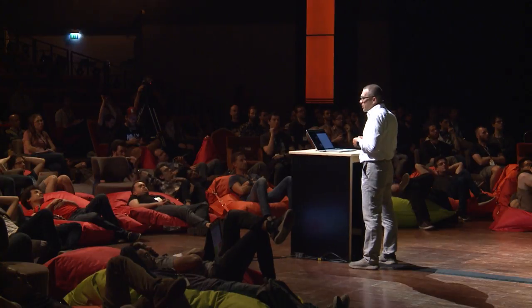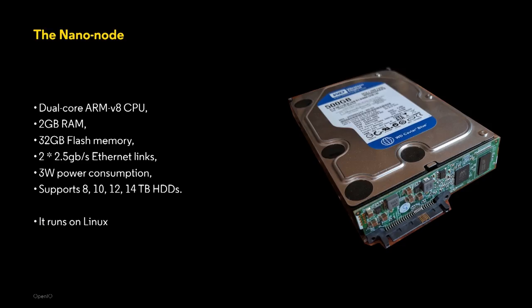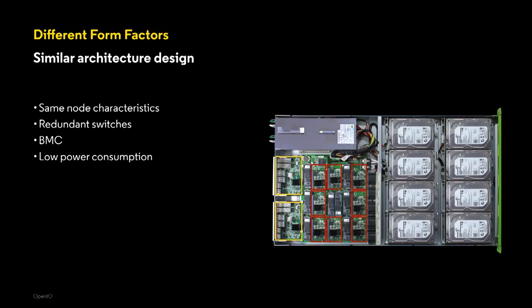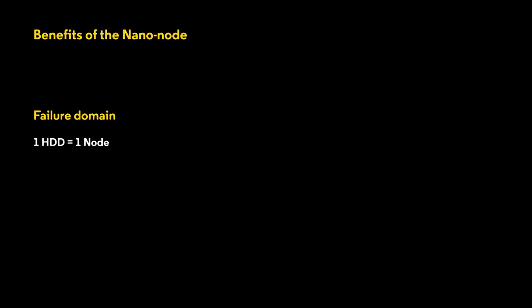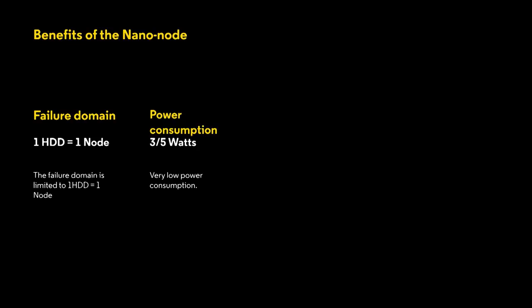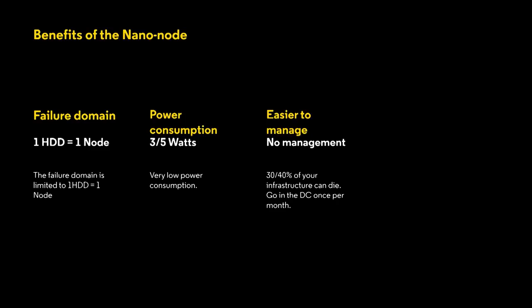What is happening now? There is a new device which is pretty nice, because it's a very simple computer in front of a standard drive. It has a dual-core CPU, it has all the features that you need, it exists in several form factors, and it can run standard software. The benefits are a lot. There is one failure domain to manage — this is one disk. The power consumption is 3 watts per disk on top of the disk itself, and it's easier to manage.